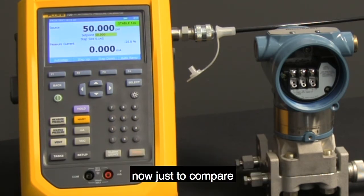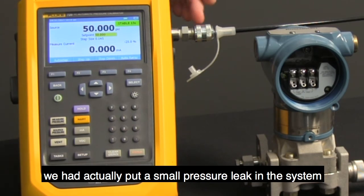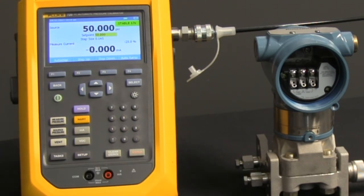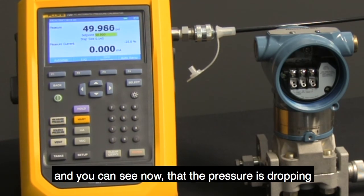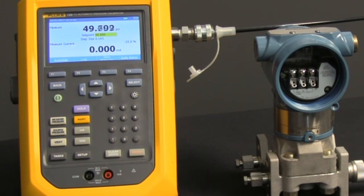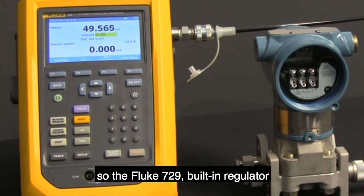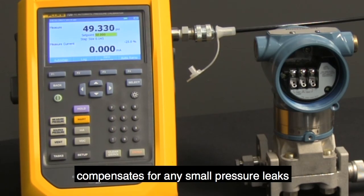Now just to compare, we actually put a small pressure leak in the system. If I set the calibrator to measure, the regulator turns off and you can see now that the pressure is dropping. So the Fluke 729 built-in regulator compensates for any small pressure leaks.